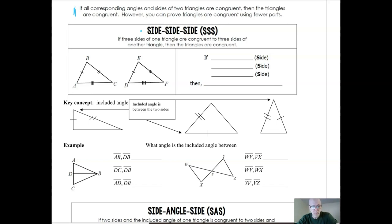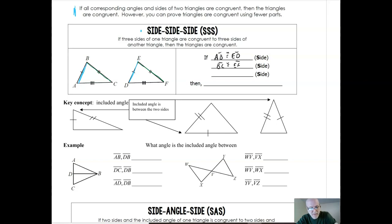The way the congruence shortcut works is that if you can conclude — either by seeing it in a diagram or being told in words — that those sides are congruent, then you know the triangles are congruent. So AB is congruent to segment ED, BC has two tick marks matching EF so BC is congruent to EF, and AC has three tick marks matching DF so AC is congruent to DF. That's enough to say the triangles are congruent — you don't need to also be told the angles are congruent. That's why it's a shortcut.